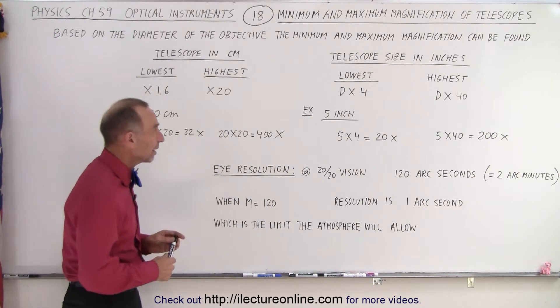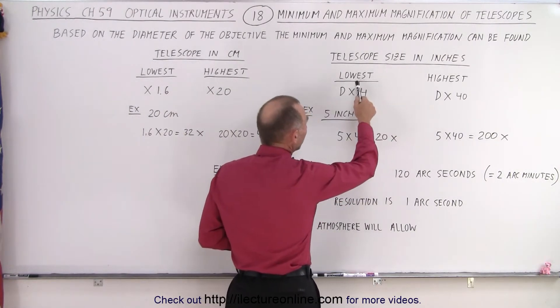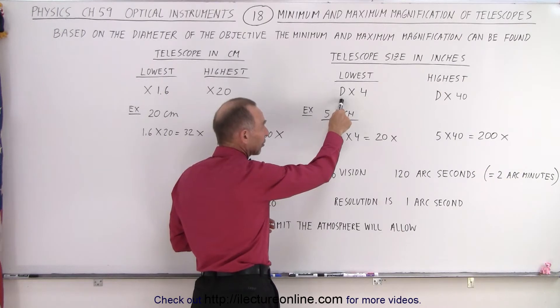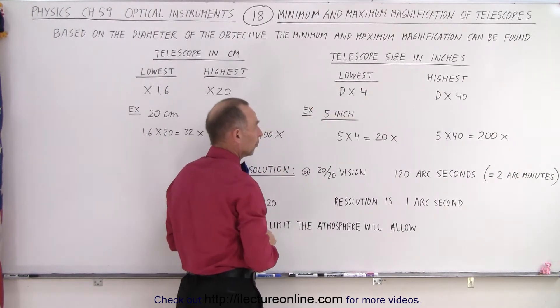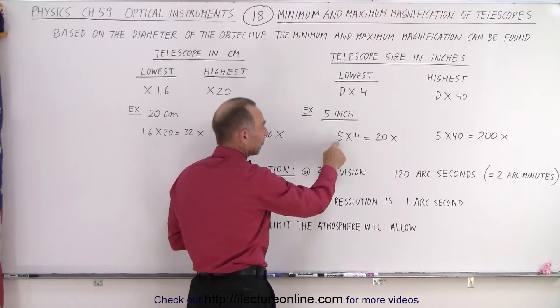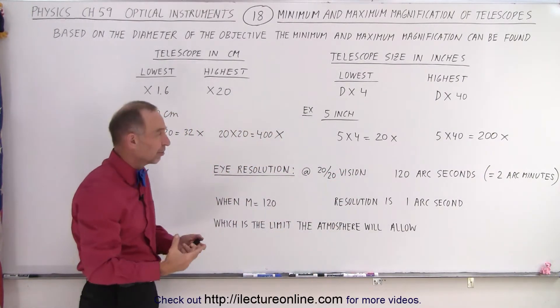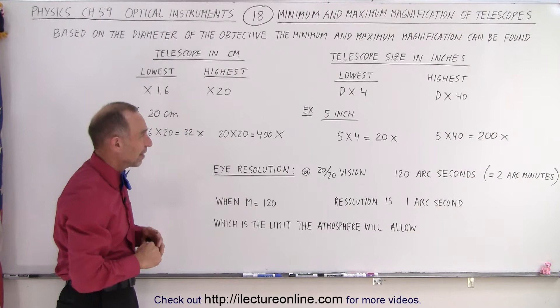So if we take telescope sizes in inches, typically the lowest magnification should be the diameter in inches of the telescope times 4. So if you have a 5-inch telescope, 5 times 4 is 20x. So the lowest magnification that it's effective would be 20x for a 5-inch telescope.